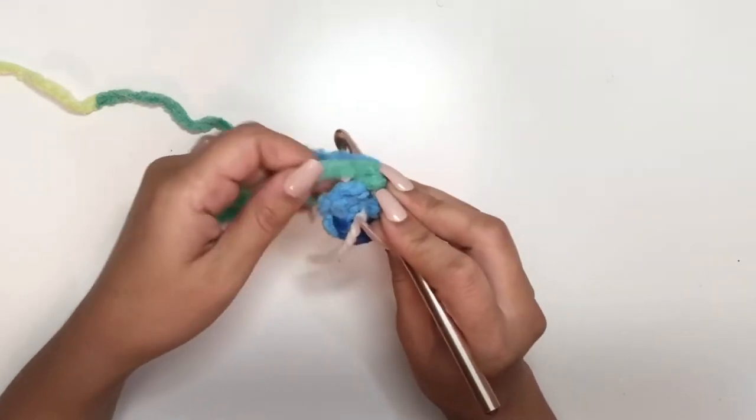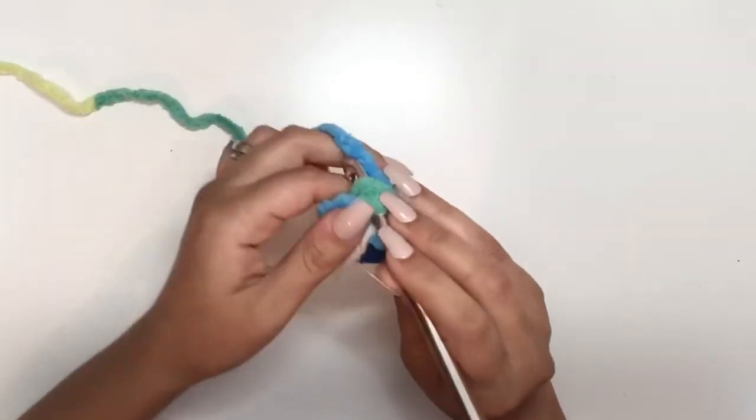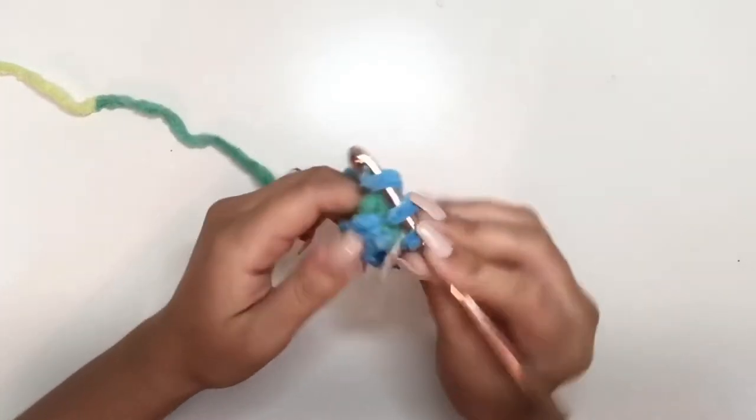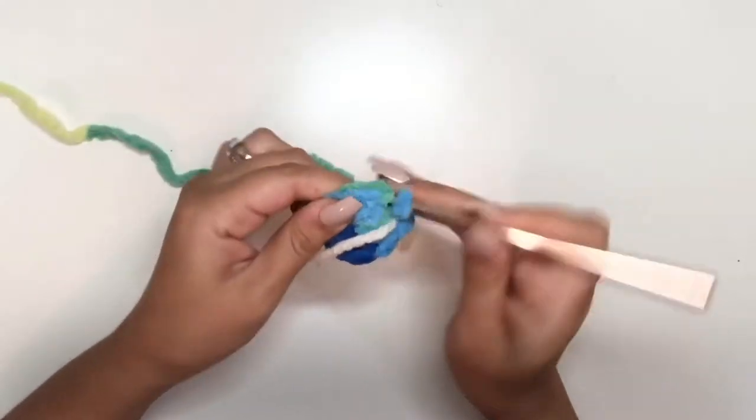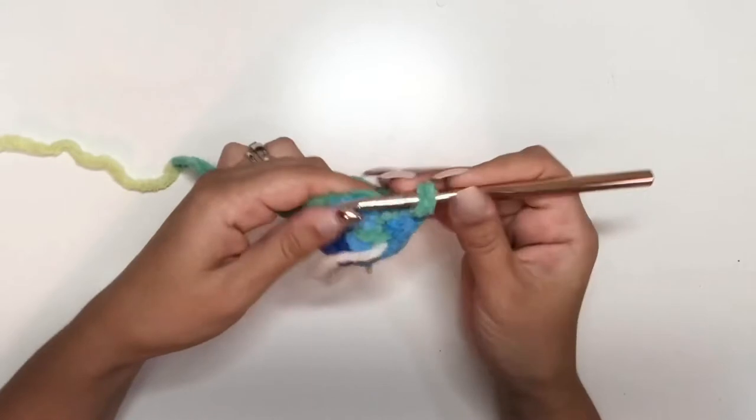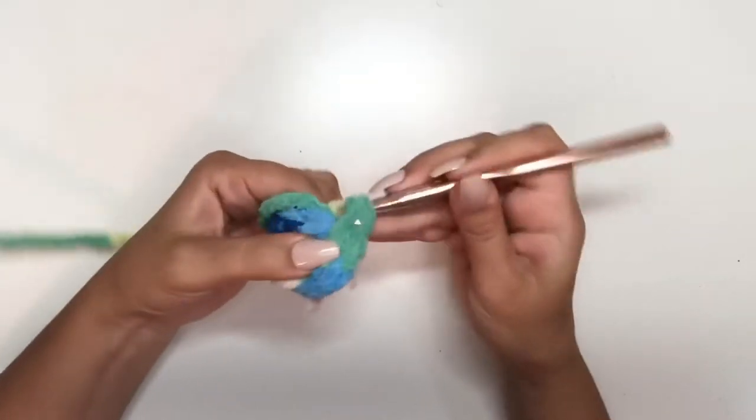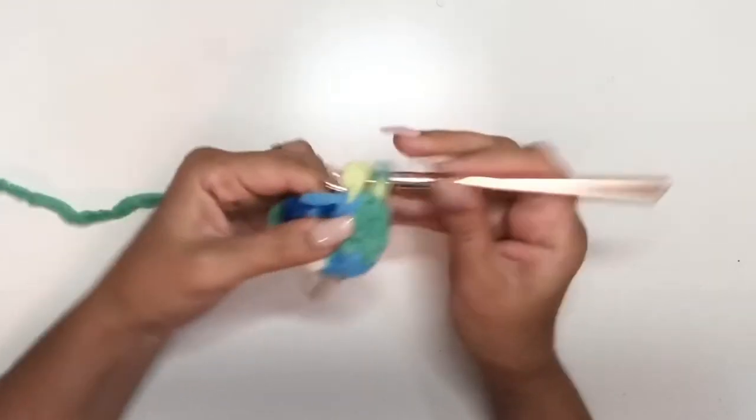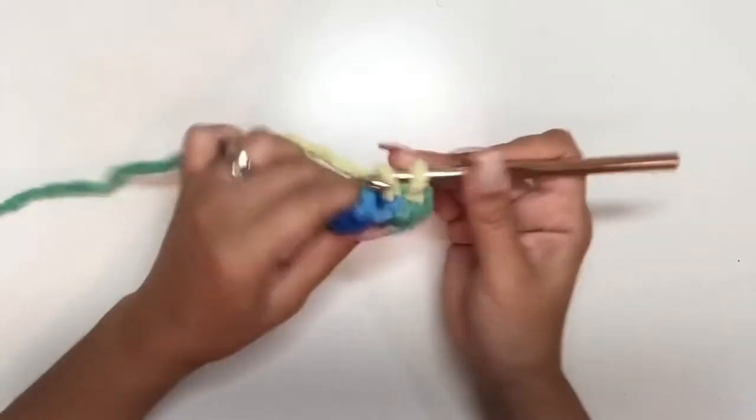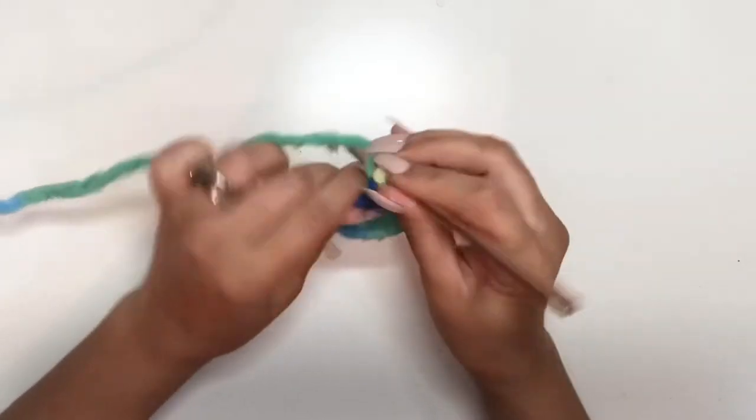Make sure to work your end in along with your stitches to secure it. We're working two single crochets into each stitch for a total of 14 single crochets for this row.